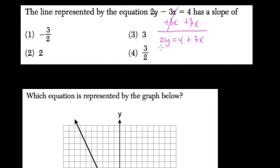We want to know what y is, so divide everything by 2. y equals 2 plus 3 halves x. So 3 halves is your slope.